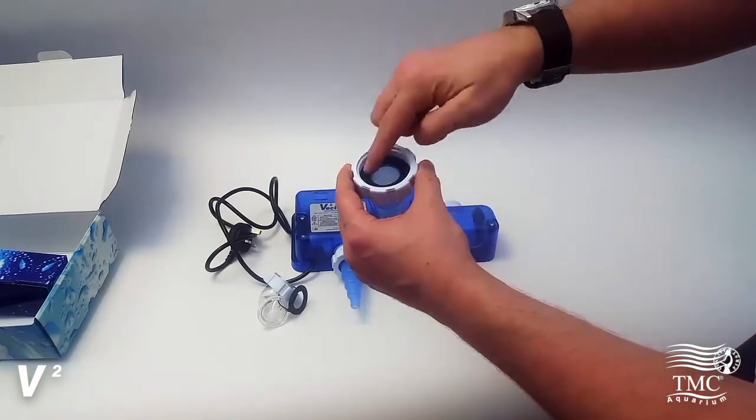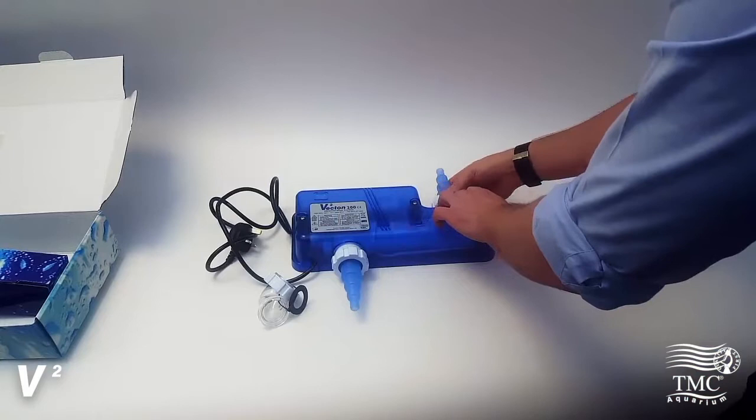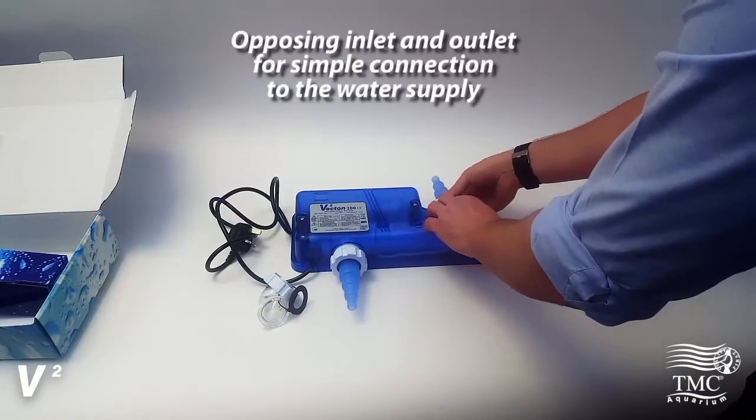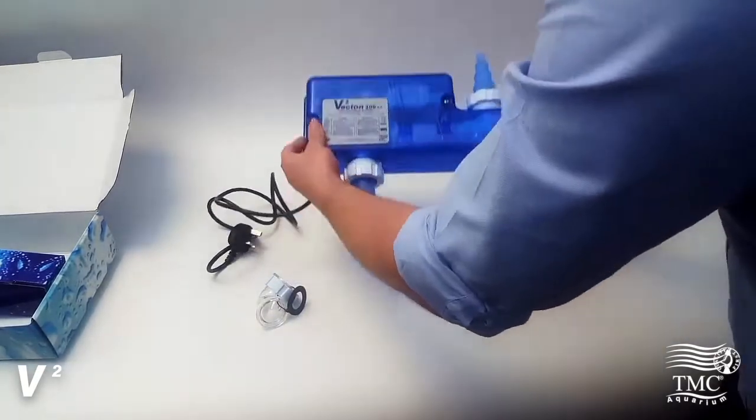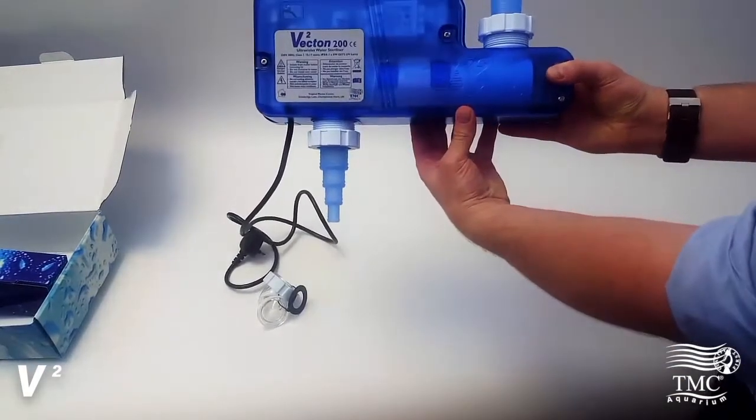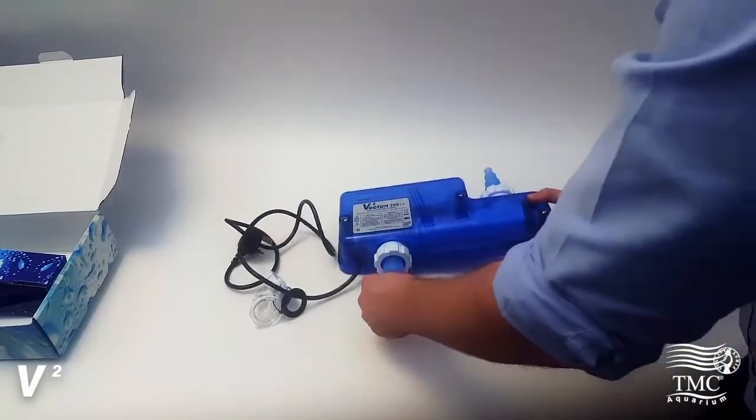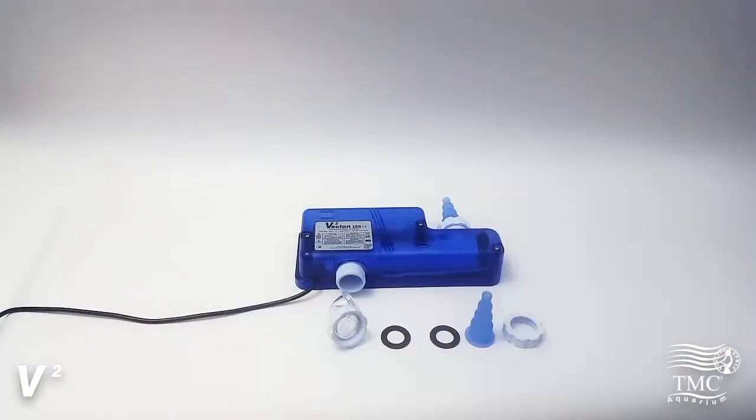Spares are available from TMC Stockists. The UV has opposing inlet and outlet connections. This means that the water will go in the bottom and then come out of the top. This will completely fill the unit and ensure the best possible sterilization.